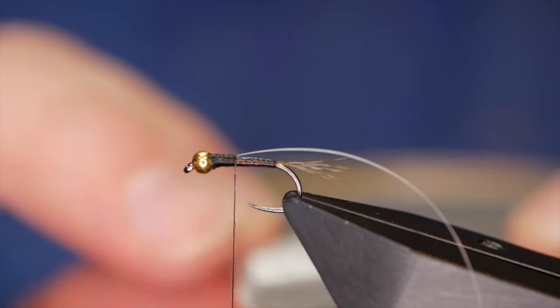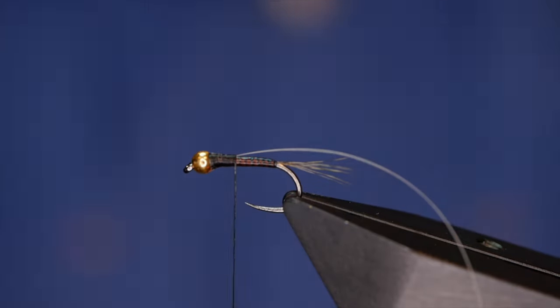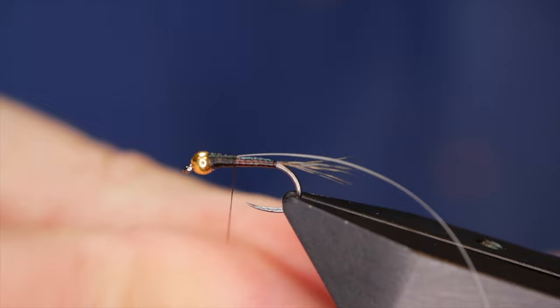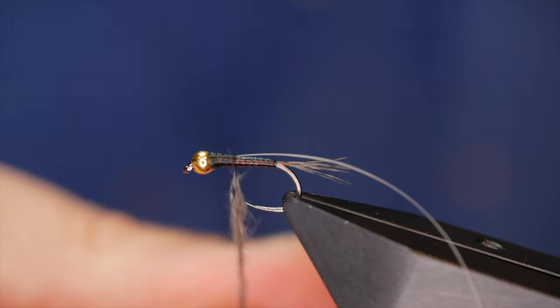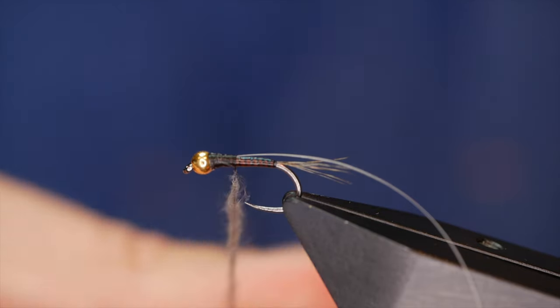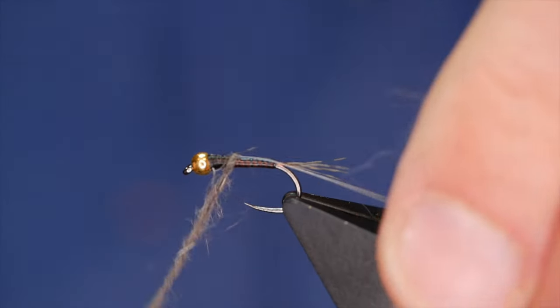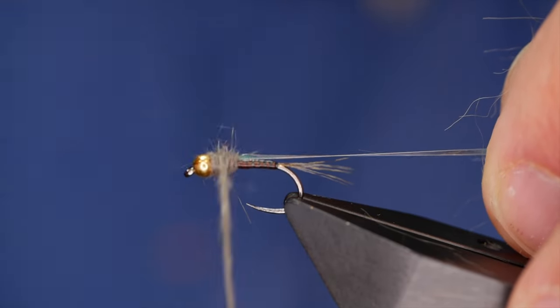For the thorax itself I'm using some blue dun natural, this is a squirrel dubbing. I've already taken a bit out of the packet and you don't need very much. I want it to be not a huge thick thorax, which does work for some flies but not particularly well for this one. I find the thinner the thorax the better the fly works out.